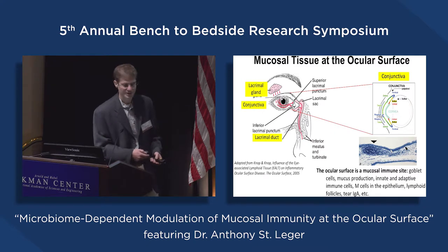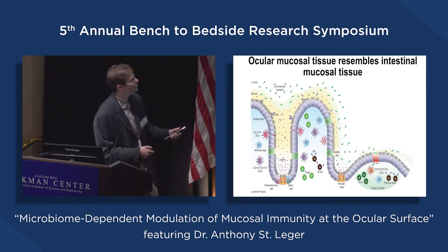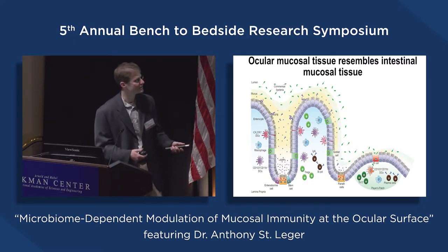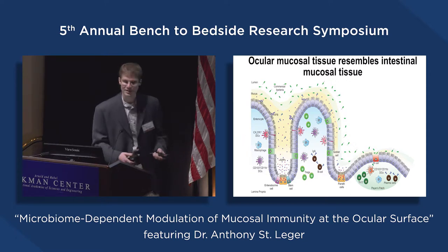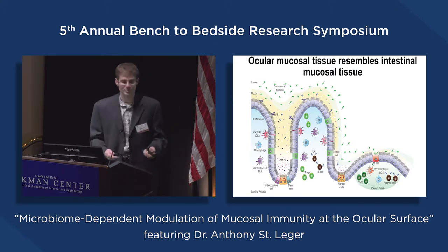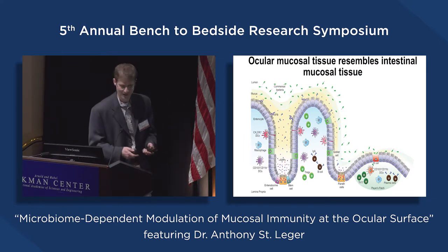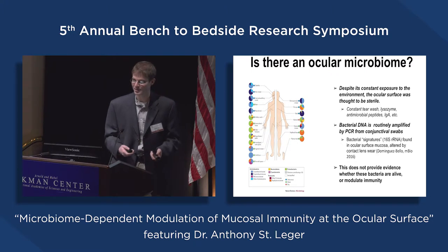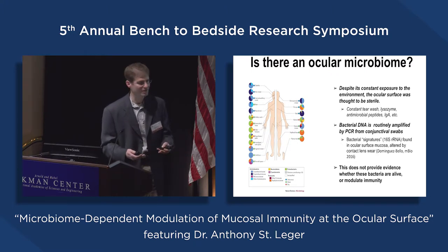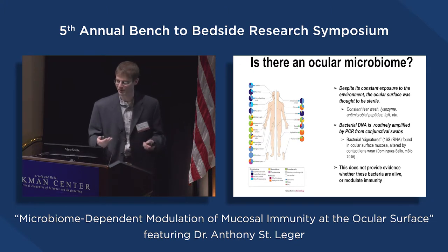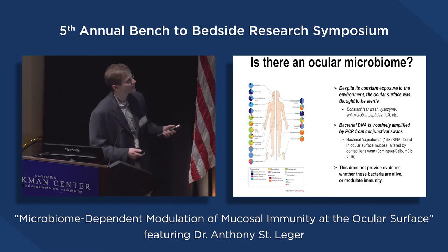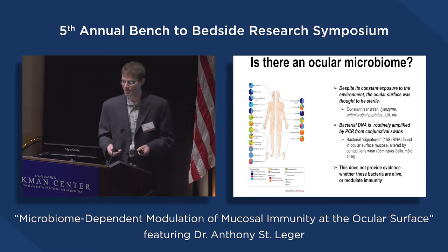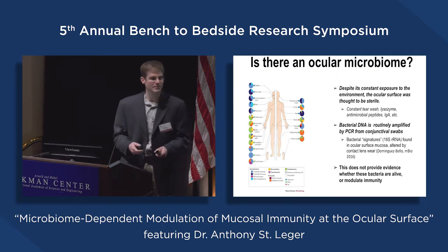If we compare the cells in the conjunctiva to a conventional mucosal immune tissue like the intestine, you see that all the cells are there — the M cells, innate and adaptive cells, goblet cells producing mucus. However, it's well known in the intestine that you need commensal bacteria to appropriately tune the immune response to help prevent infectious disease as well as autoimmunity. At the ocular surface, however, the thought was not the case — the ocular surface is conventionally thought to be sterile. If you take a swab of the central cornea, you're not going to get any bacteria, and because of the constant tear washing, lysozyme, antimicrobial peptides, and IgA, it's not a very hospitable environment for bacteria.